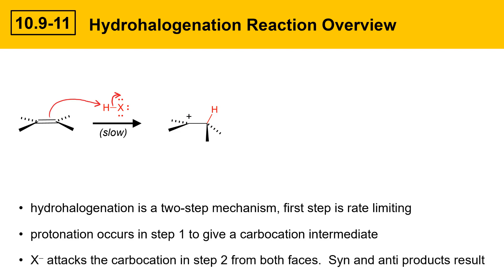In the next step, X⁻ attacks the carbocation, and there are two possible faces of the carbocation. It could come in either from the face that the H was added from, or it could come in from the opposite face.